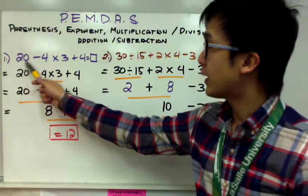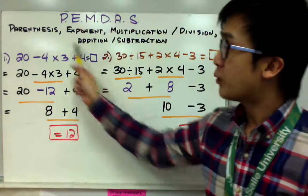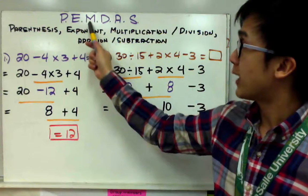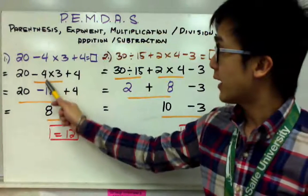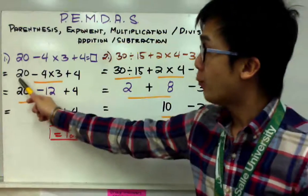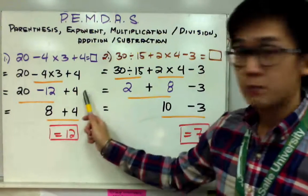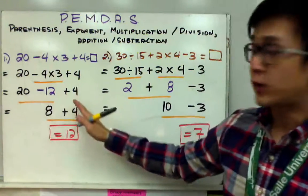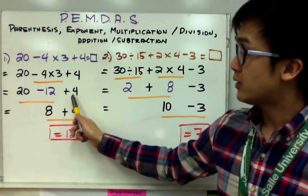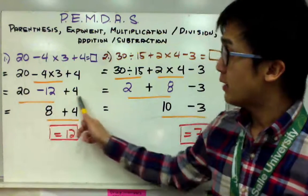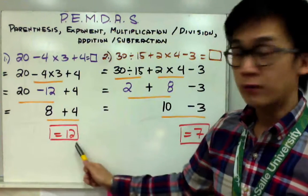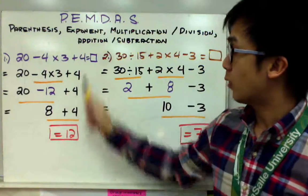For example number one with PEMDAS, I have 20-4×3+4. This problem has three operations: subtraction, multiplication, and addition, so I need to work on multiplication first. I multiply 4×3 which gives me 12, then bring down 20 and the minus sign. Now I only have addition and subtraction, so I use the left-to-right method: 20-12=8, and 8+4=12. So 20-4×3+4=12.